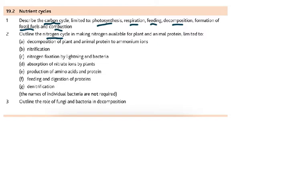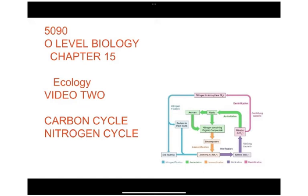Then the other is the nitrogen cycle, in which we are going to discuss decomposition, nitrification, nitrogen fixation, absorption of nitrate by plants, production of amino acids and proteins, feeding and digestion of proteins, and denitrification. And then we outline the role of fungi and bacteria in decomposition.